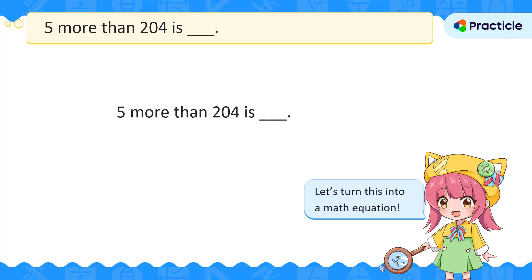First, we need to look for the word is and turn it into an equal sign. Then, we're going to look for the number that comes before the words more than and put a plus sign in front of it.